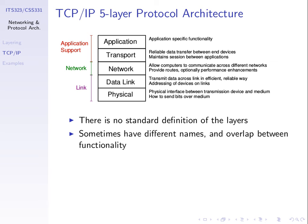Over the next few topics we'll see examples of the top three layers. We've covered the bottom two already — how to send signals, and data link layer techniques like ARQ and flow control. Different textbooks and people may talk about different models with different names, maybe four layers or six. There's no fixed standard. But that's what we will use in this course.